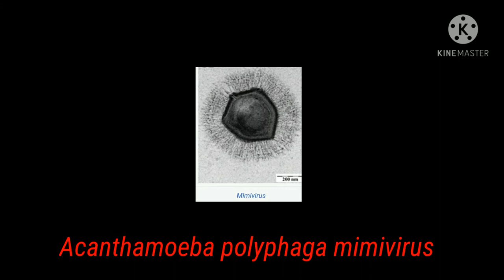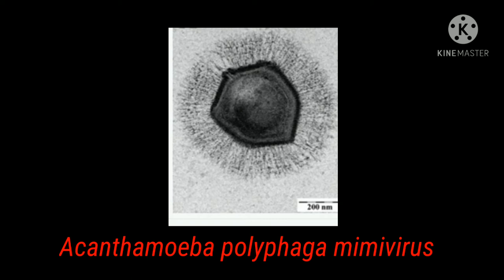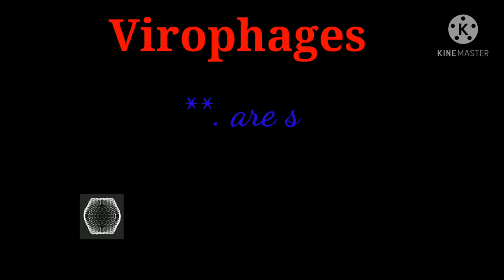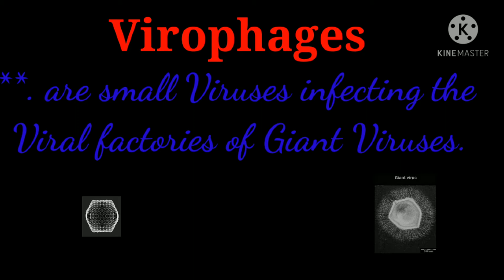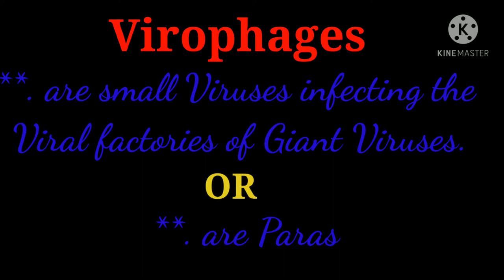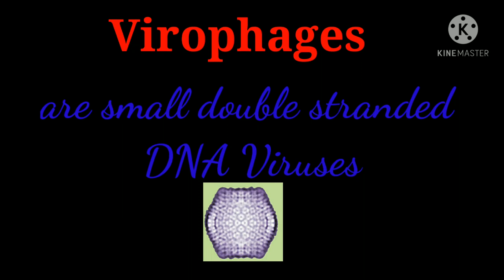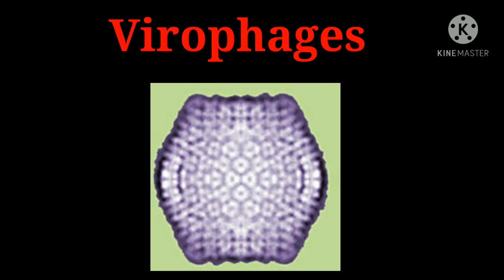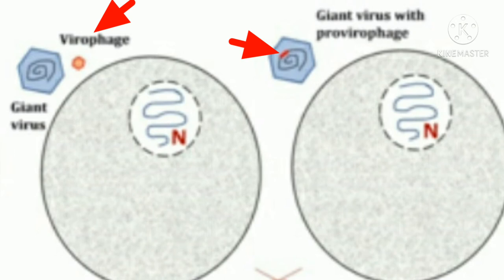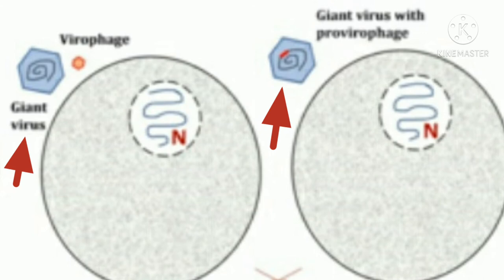The first giant virus was discovered in 2003. Next, we will see what are virophages. Virophages are small viruses infecting the viral factories of giant viruses, or we can say, virophages are parasites of giant viruses. Virophages are small double-stranded DNA viruses and are named so because of similarities with bacteriophages. Virophages co-infect unicellular eukaryotes along with giant viruses but are dependent on the giant virus to replicate.